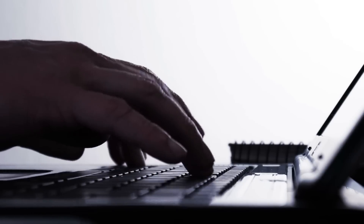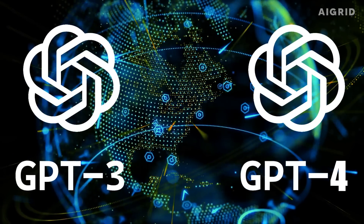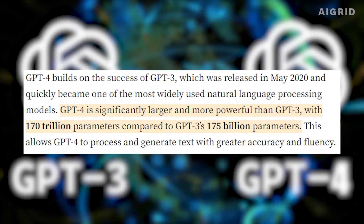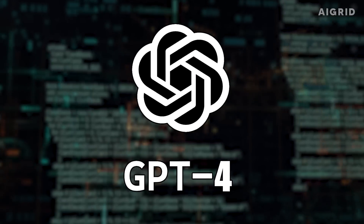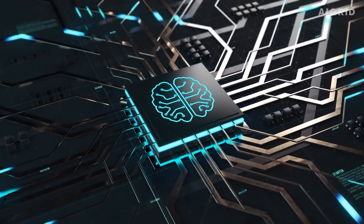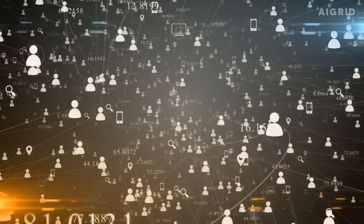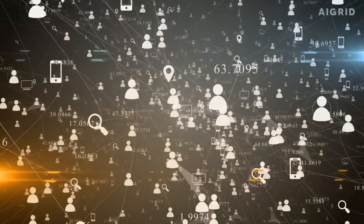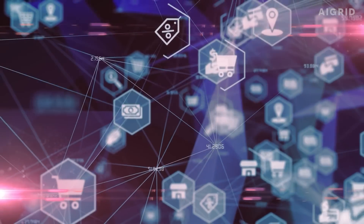Both chatbots offer benefits for your website's growth. However, GPT-4 is speculated to have 170 trillion parameters compared to GPT-3's 175 billion parameters, making it considerably bigger and more powerful. GPT-4 could process and produce text more accurately and fluently. It will come with a reduced failure rate and can handle more tasks. It will be able to create text entirely from scratch, whereas GPT-3 can only do so based on previously written text. If you are looking for the best option for your website, you should wait a bit for the GPT-4 release.